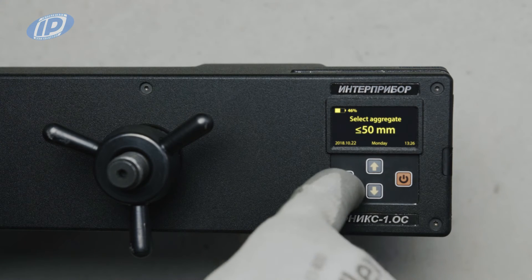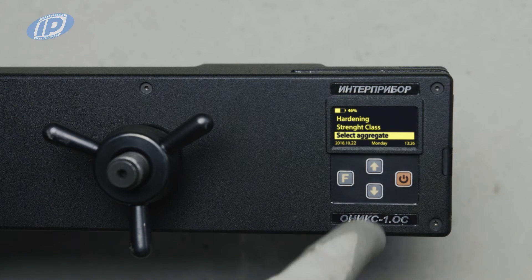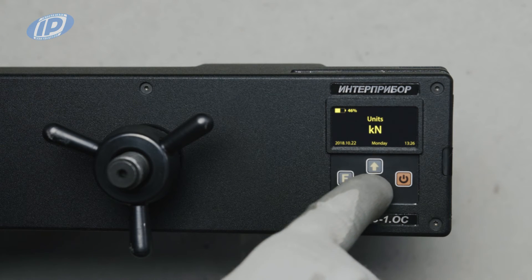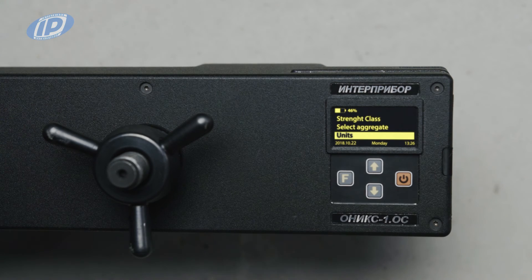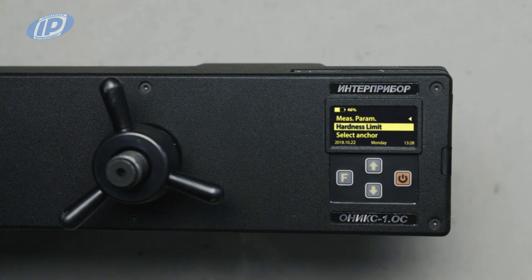The selected measurement parameters will be shown briefly. Choose the size of the aggregate. Choose a convenient measurement unit to indicate strength, and the selected measurement parameters will be shown briefly. After setting the parameters, you can begin to make measurements.